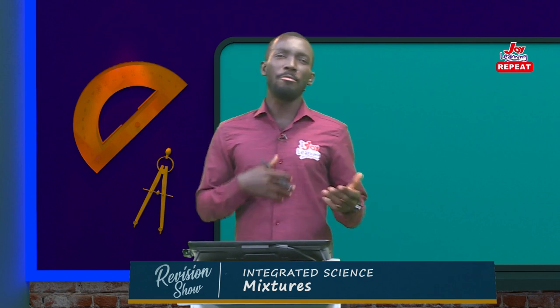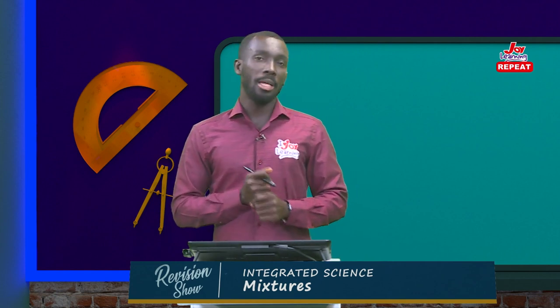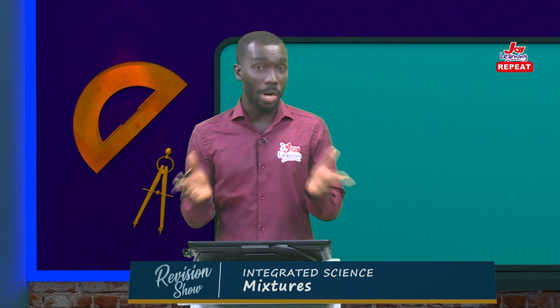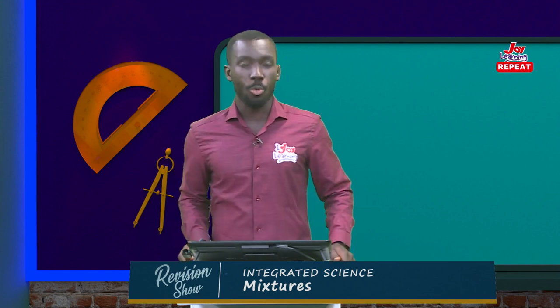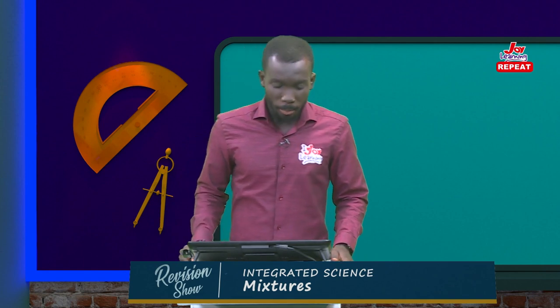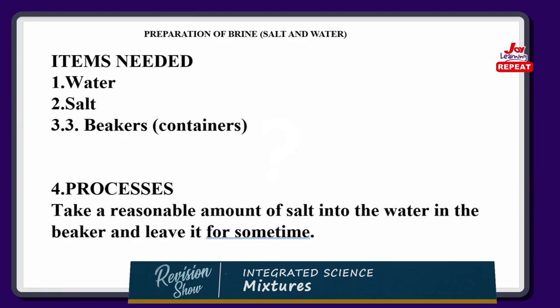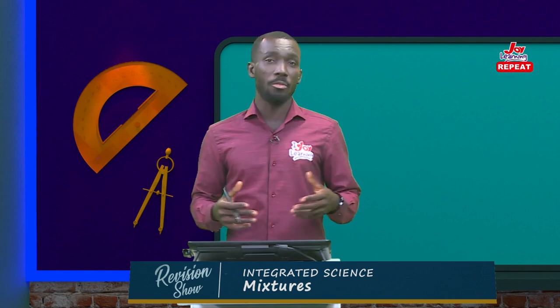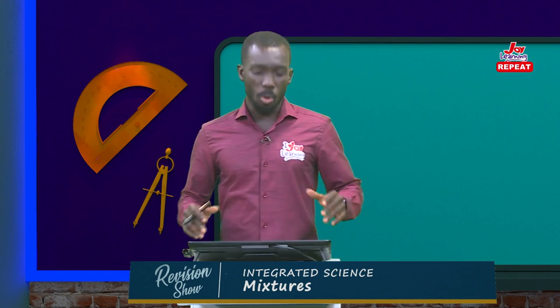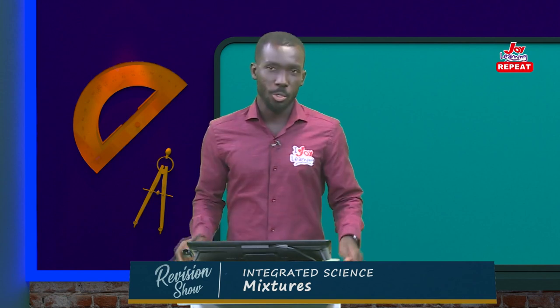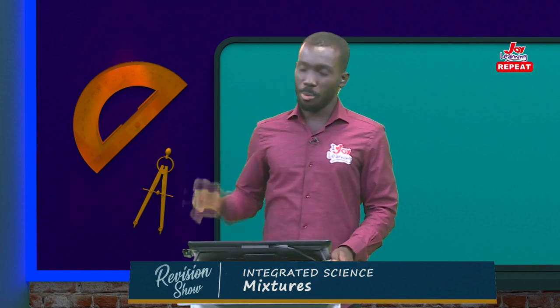Let me take you through one very common way of producing a mixture — brine, spelled B-R-I-N-E, or what is called salt and water. The items needed are water, salt, and a beaker or container. The process is: take a reasonable amount of salt, put it into water, leave it for a while, and you will see the salt dissolve completely in the water — giving you a uniform mixture, which is a solution. Stay tuned — I'm going for a quick commercial break and I'll be right back.